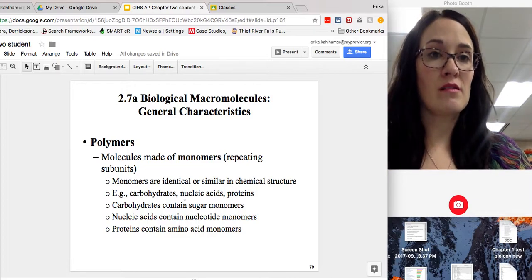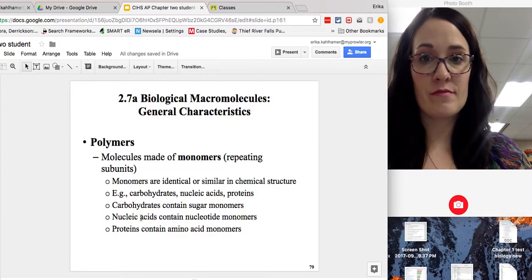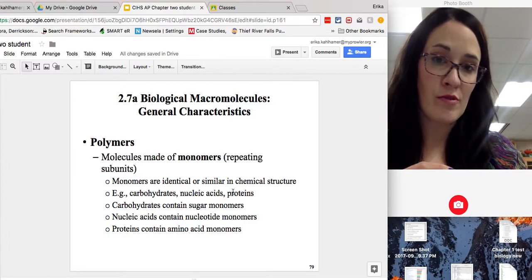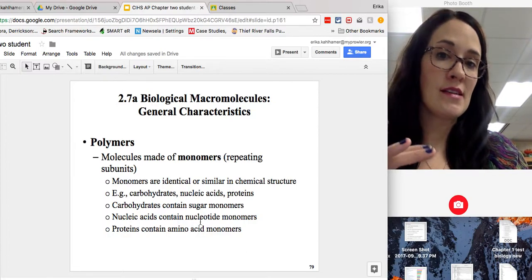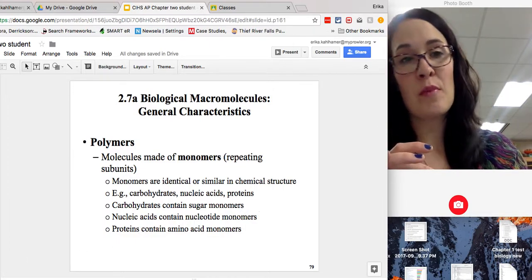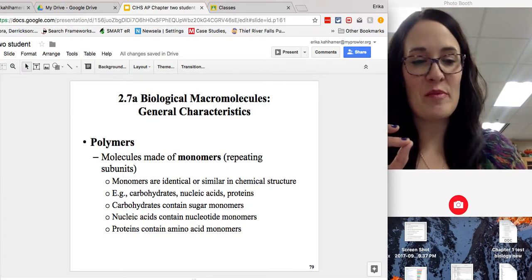The building blocks to build those, so the carbohydrates, their specific monomer is simple sugars. Nucleic acids is nucleotide monomers, and proteins contain amino acid monomers.